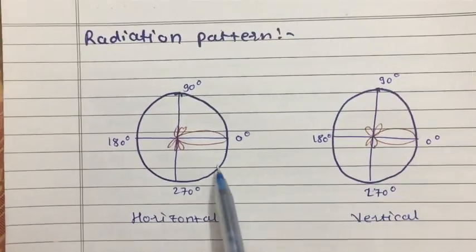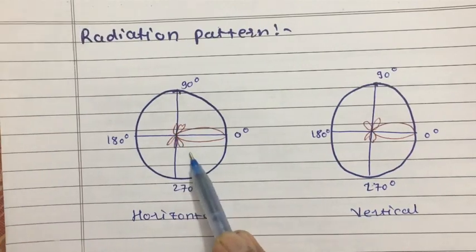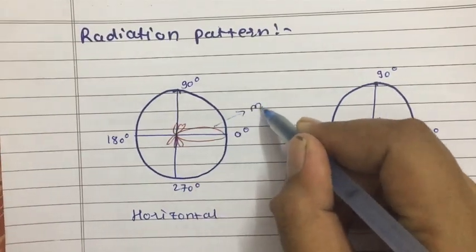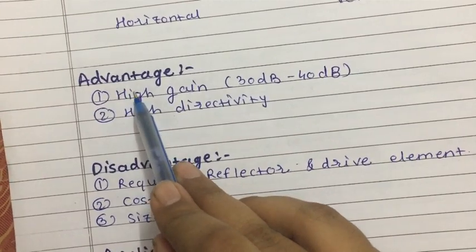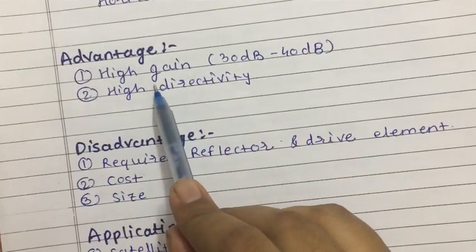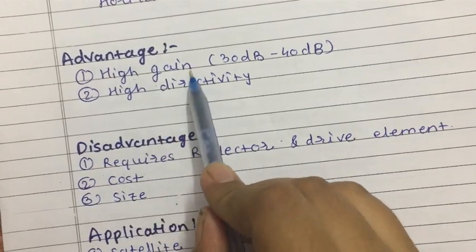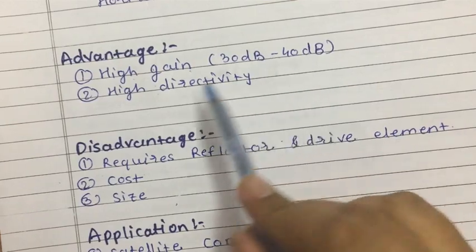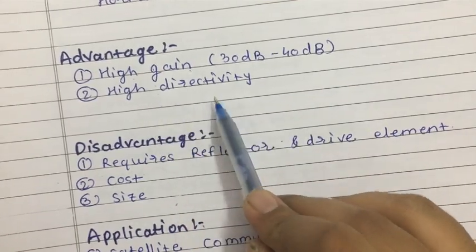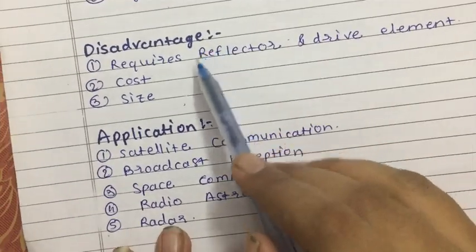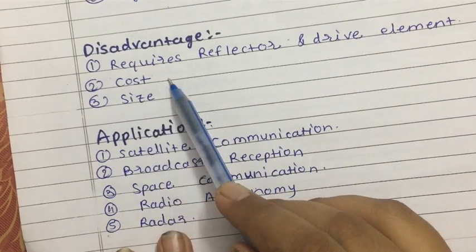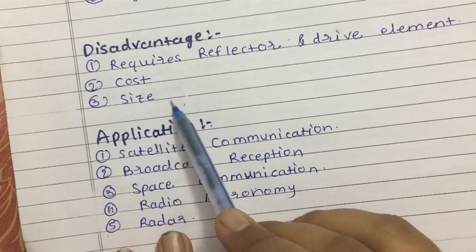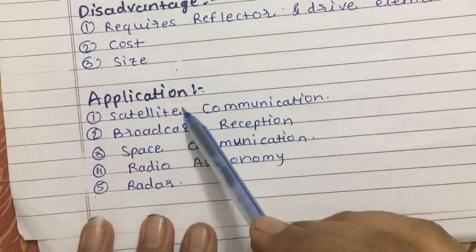The radiation pattern shows major lobes both horizontally and vertically, and minor side lobes. Advantages of parabolic reflector antenna: very high gain in the range of 30 to 40 dB, and high directivity. Disadvantages: it requires both a reflector and a driven element, its cost is high, and its size is large.